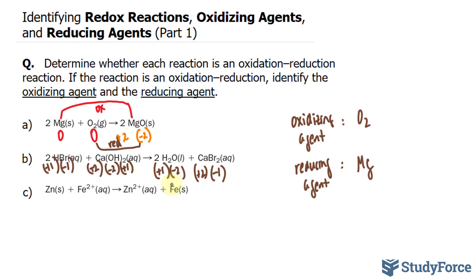Moving on to our last question, we have Zn + Fe²⁺ → Zn²⁺ + Fe. The oxidation state here is zero, here it's plus two, here plus two, and here zero.